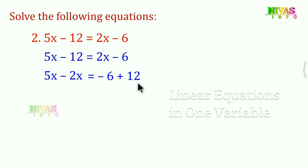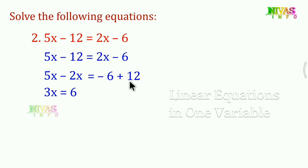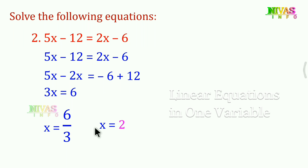5x minus 2x gives 3x. Negative 6 plus 12 gives 6. So 3x is equal to 6. Only x value is 6 upon 3. 6 divided by 3 is equal to 2. That is the x value.